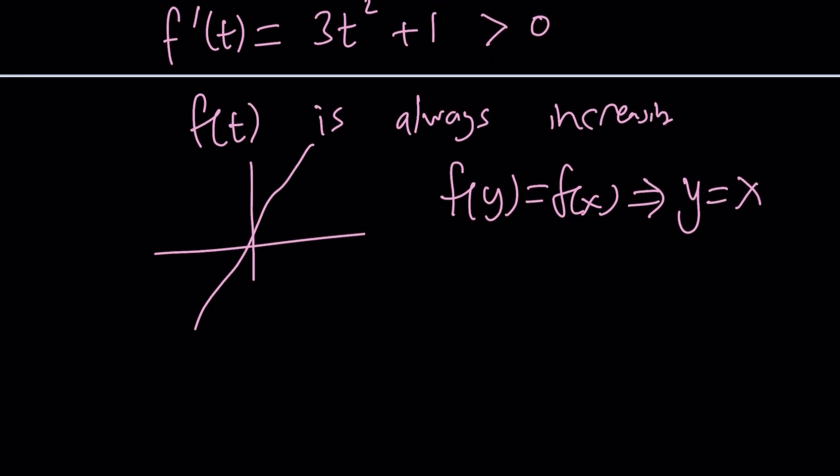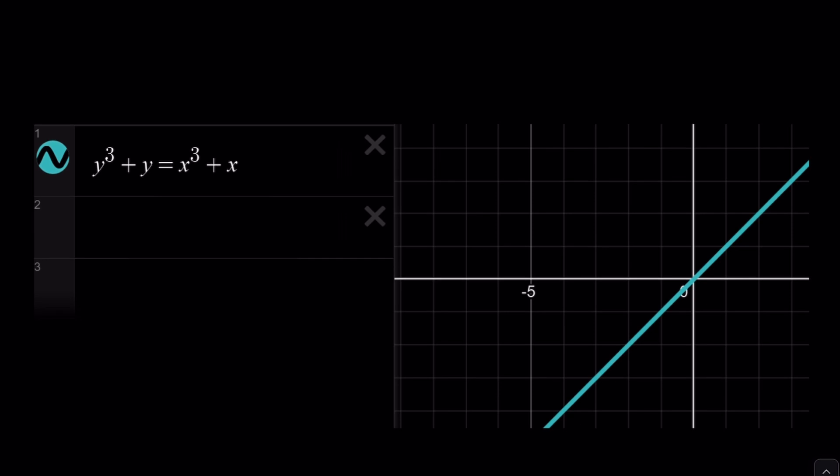f is injective or 1 to 1, which means there's only going to be one solution. And this brings us to the graph of this relation and to the end of this video.